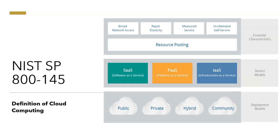The next deployment model is private cloud. The cloud infrastructure in a private cloud is operated only for a single organization. It may be managed by the organization or by a third party, and may be located on premises or off premises.